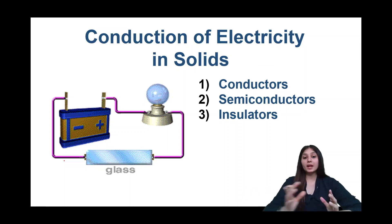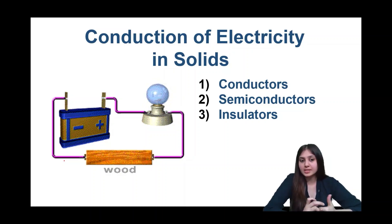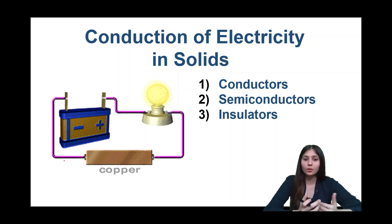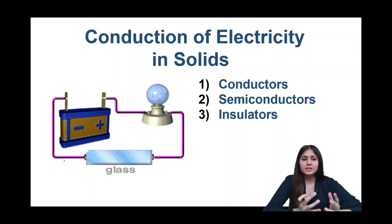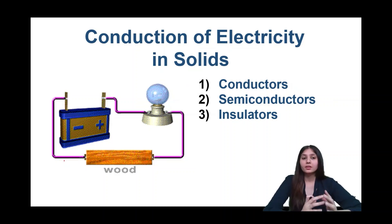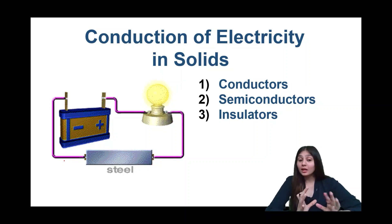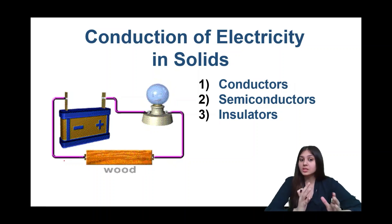On the basis of whether or not they can conduct, materials are classified into three types. The first one is conductors, which means they conduct electricity nicely without any issues — examples are all the metals, mostly. Then we have insulators, which are materials that do not conduct electricity no matter what — examples are wood and glass. And then we have semiconductors, which are a little different: they may conduct electricity given certain circumstances, and we are going to discuss what those circumstances are.